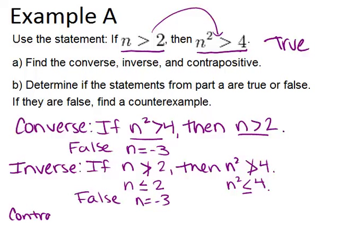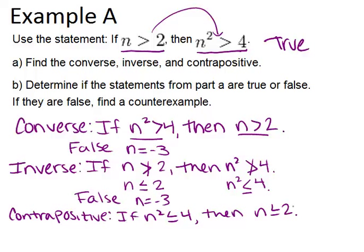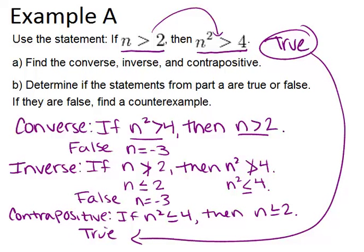Finally, the contrapositive. The contrapositive is created by combining the converse and the inverse — we both negate and switch the two parts of the original sentence. So that would be: if n squared is less than or equal to 4, then n is less than or equal to 2. The contrapositive is always true if the original statement is true — the truth values of both are always the same. You wouldn't be able to find any counterexample to that statement.